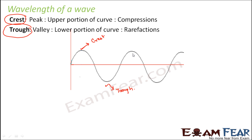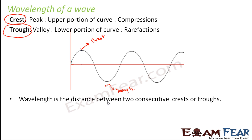So what do we mean by wavelength? Wavelength is the distance between two consecutive crests or troughs. This is the first crest, this is the next crest, and this is the third crest. The distance between two crests is termed as wavelength. So distance between any two crests or any two troughs is called wavelength. Basically, the entire distance covered by one wave is termed as wavelength.